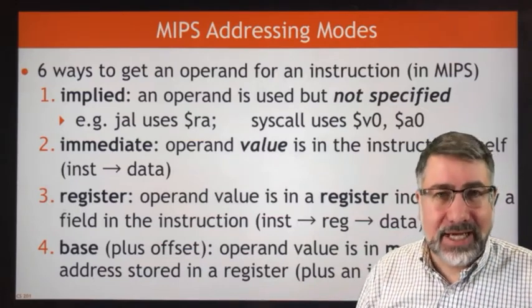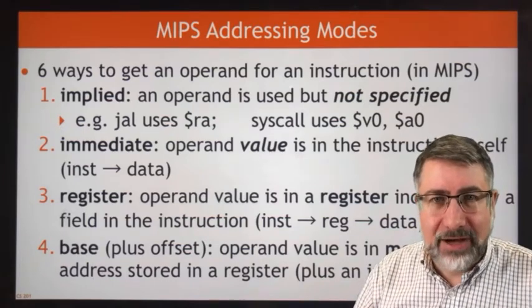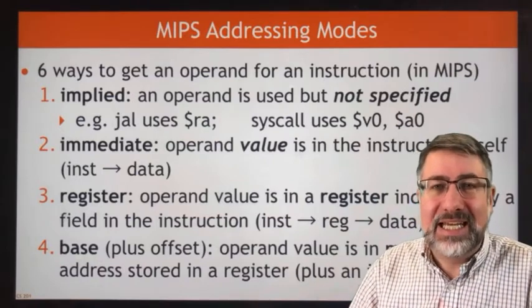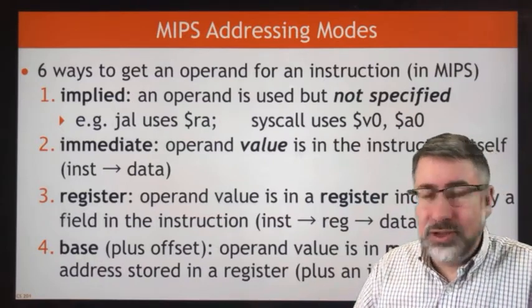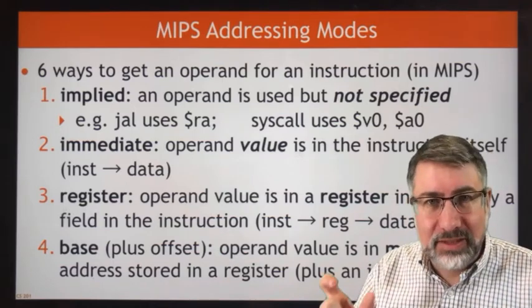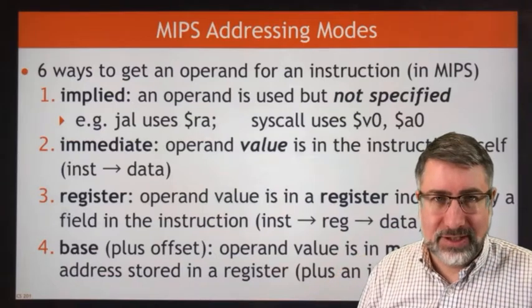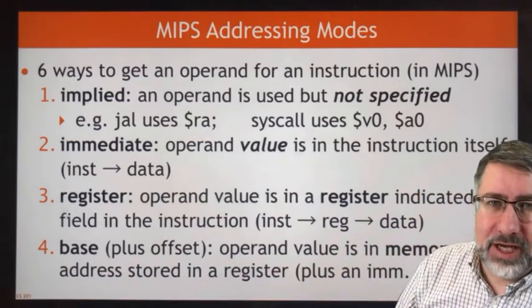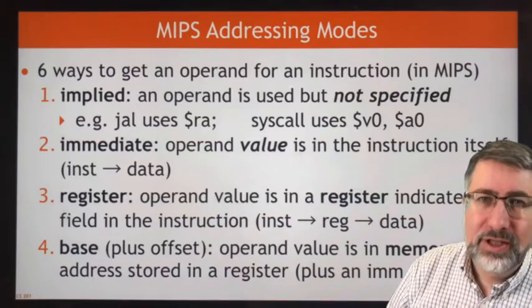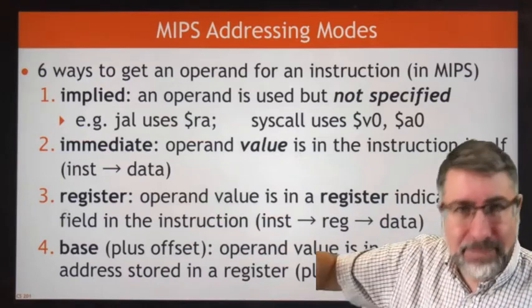Immediate is the second of our six addressing modes. This means the value we want to access is available immediately in the instruction itself. Whenever we do an immediate instruction, one of the operands is available immediately in the instruction. The value goes straight from the instruction to the ALU, bypassing the register file.